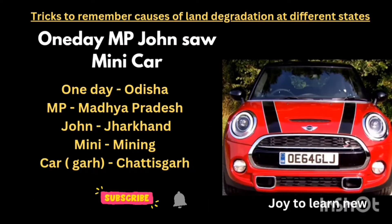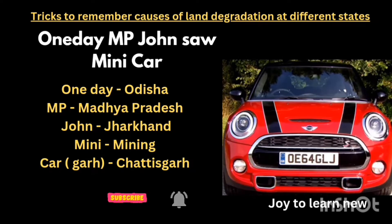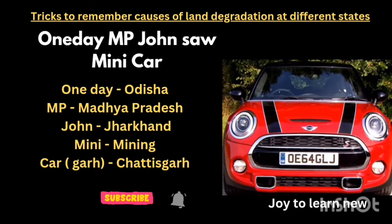The third shortcut is 'One day MP John saw minicar.' 'One day' — O and D represent Odisha; MP represents Madhya Pradesh; 'John' — J and H represent Jharkhand; 'mini' represents mining; and 'car' represents Chhattisgarh because it rhymes with 'car.' So mining and quarrying is the reason for land degradation in Odisha, Madhya Pradesh, Jharkhand, and Chhattisgarh.